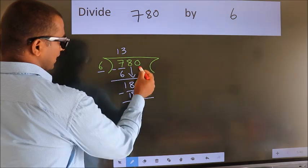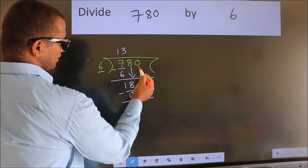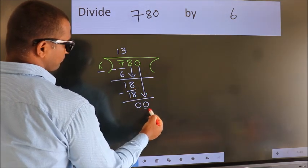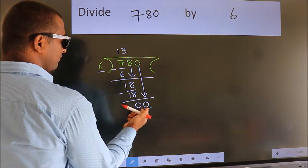After this, bring down the beside number. So, 0 down. So, 0. When do we get 0?